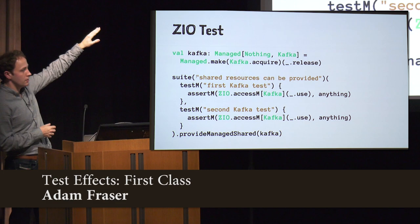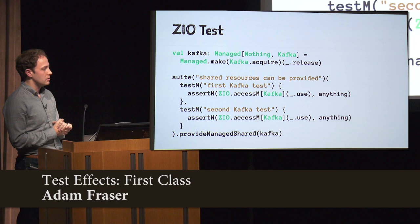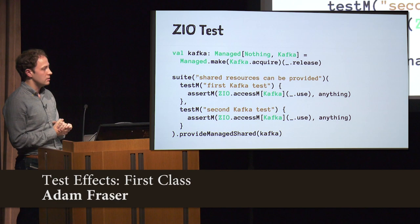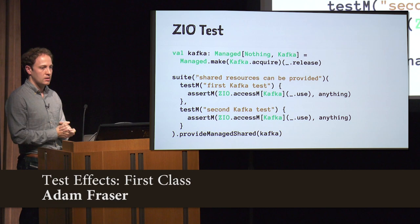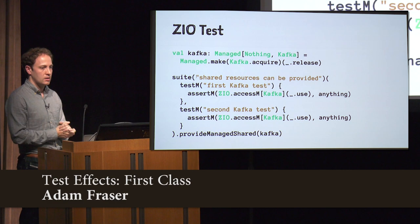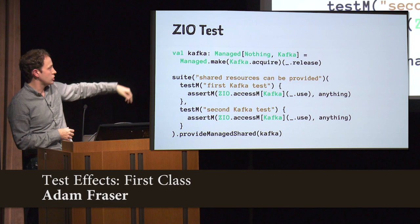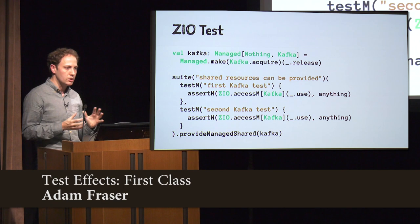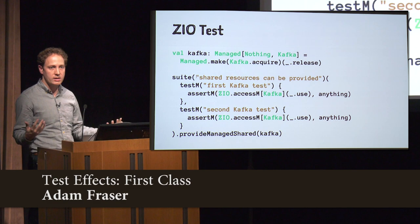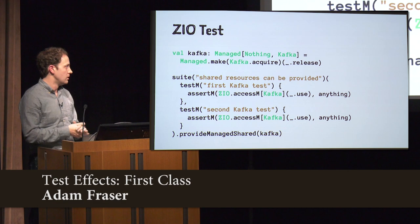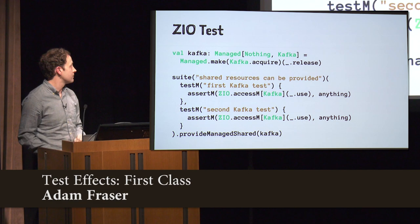How about resource usage? We can model that same Kafka service as a dependency in the environment, and then just provide that dependency. For every provide method, we've got a provide variant and a provideShared variant that will provide one copy of that resource to the entire group of tests. So if you want to provide the whole thing, provideManaged.shared. If you want to provide to each individual test, provideManaged. And that Kafka service we're providing is just a Managed that we can compose in all the ways we know how to compose managed resources. Really easy — it took more code to write the dummy tests than it did to actually solve the problem of providing the resource.